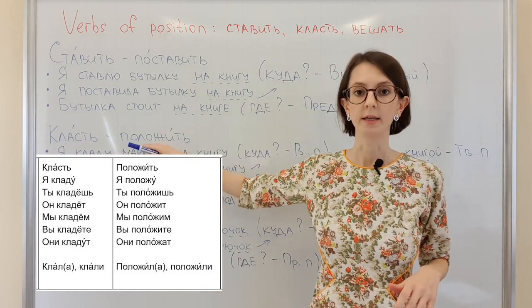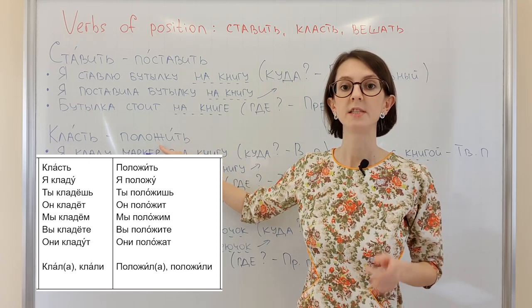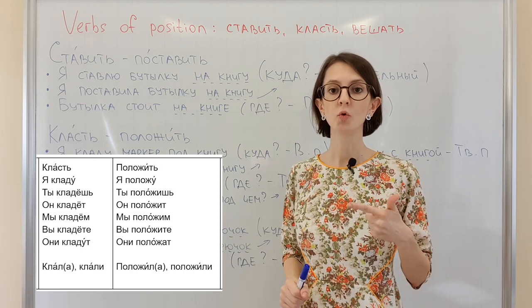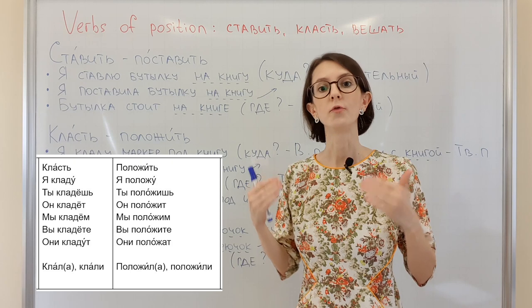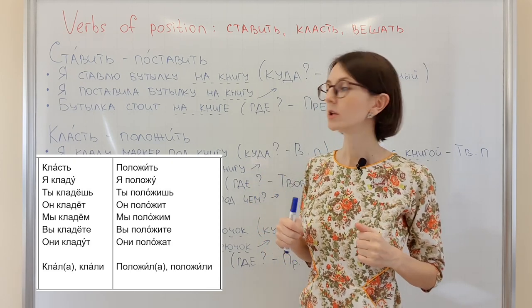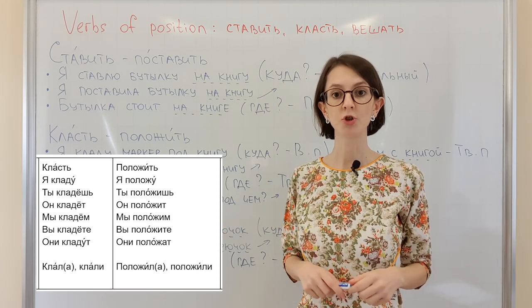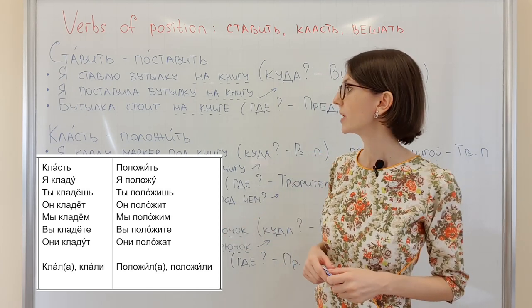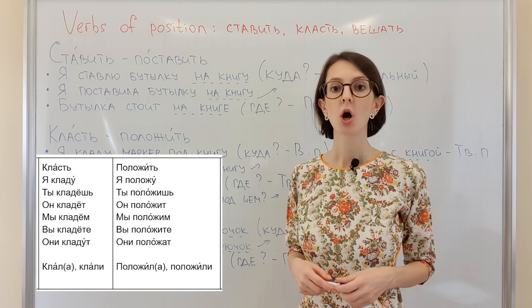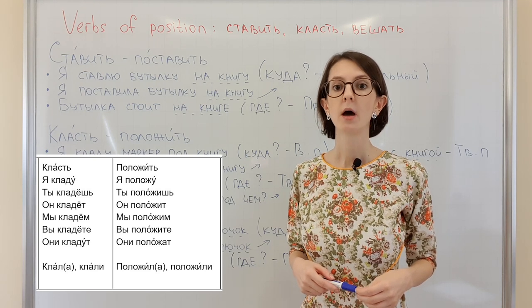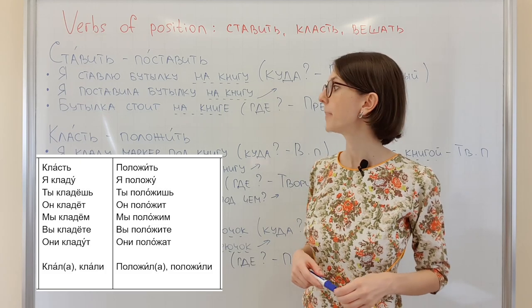Положить is the SV form — it also means to put horizontally. This is the perfective form, used only for past and future tense. Я положу, ты положишь, он положит, мы положим, вы положите, они положат.